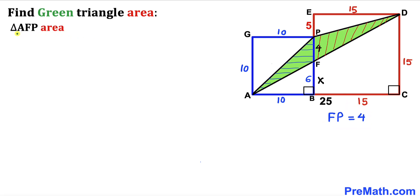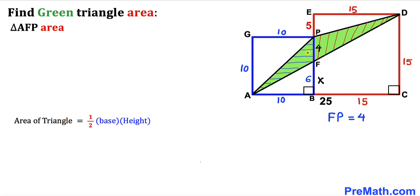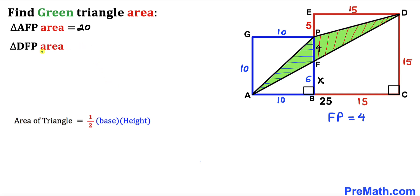Now let's calculate the area of triangle AFP. Using area equals one-half times base times height, the base is 4 and the height is 10. So the area is one-half times 4 times 10, which gives us 20 square units.